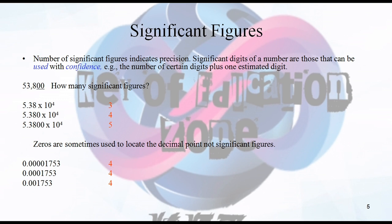Zeros are sometimes used in the location of the decimal point and affect significant figures. If you look at zeros and see the data we have, if you take 4 decimal places, then 0.0000 — we have to leave 4 zeros and consider which zeros are significant.